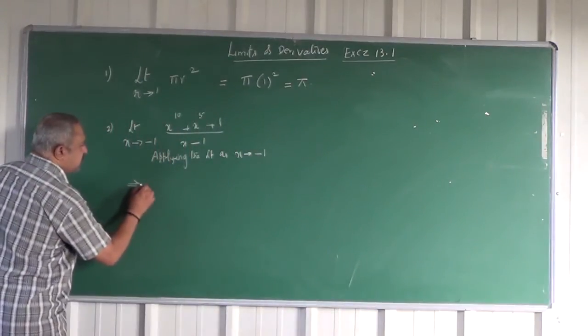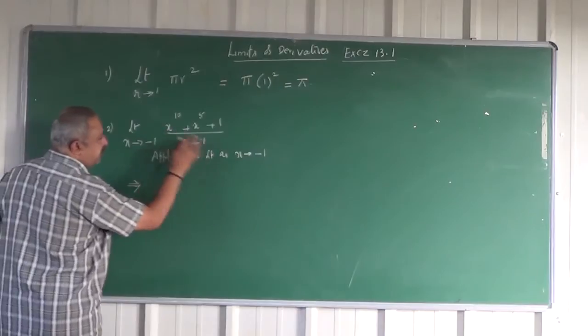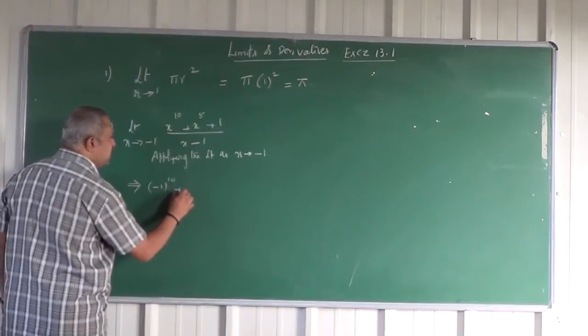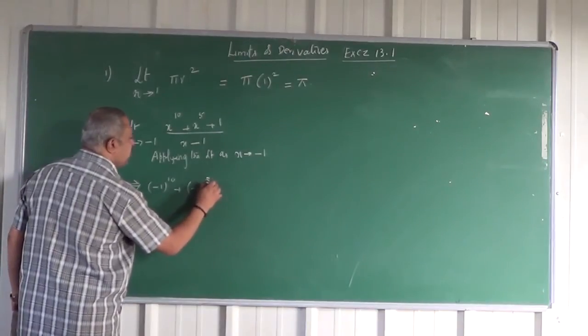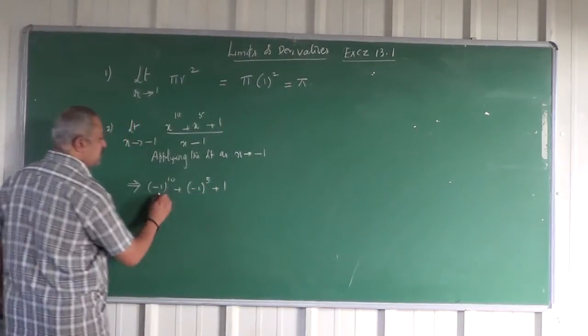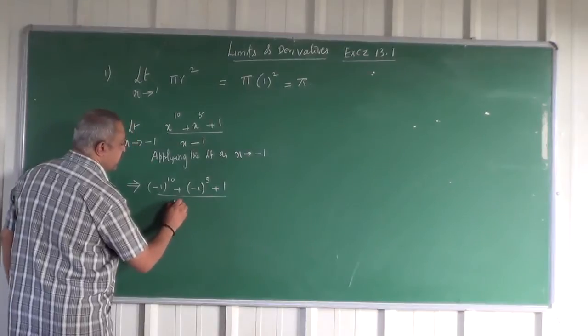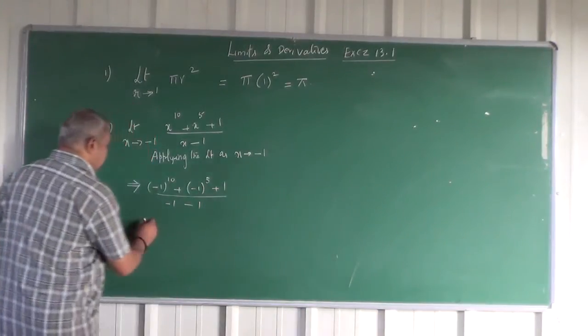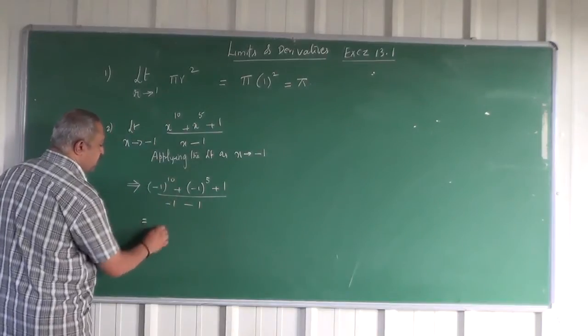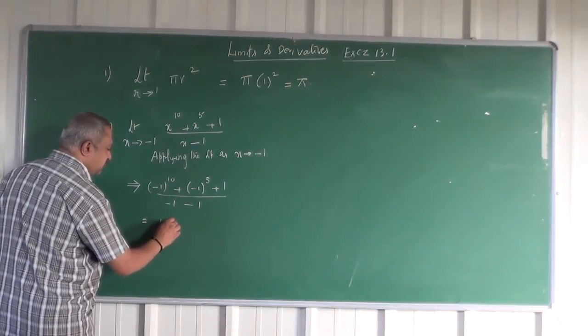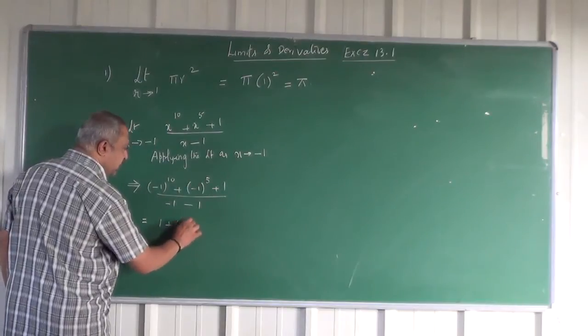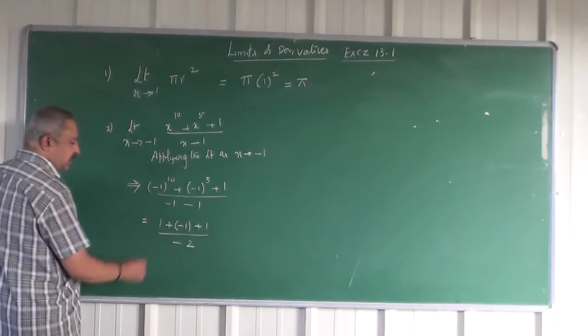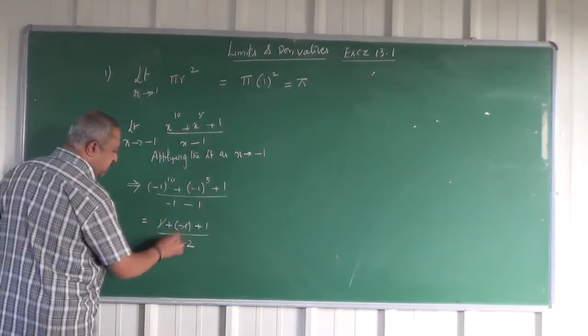Wherever you have x, you should put -1. So (-1)^10 + (-1)^5 + 1 divided by -1 - 1. (-1)^10 is 1, plus (-1)^5 is -1, plus 1, divided by -2. Plus 1 and minus 1 cancel, giving 1/(-2) = -1/2.